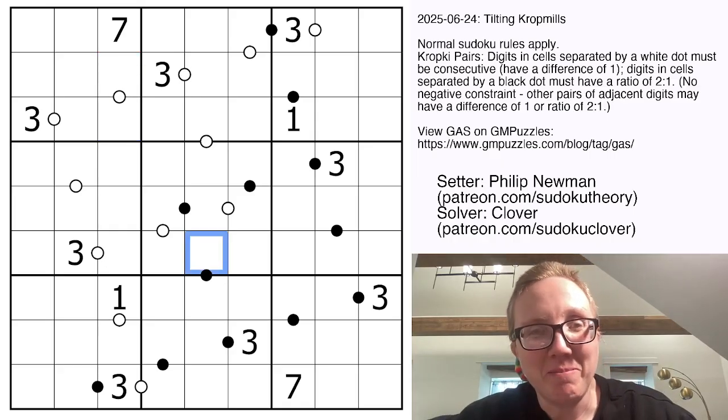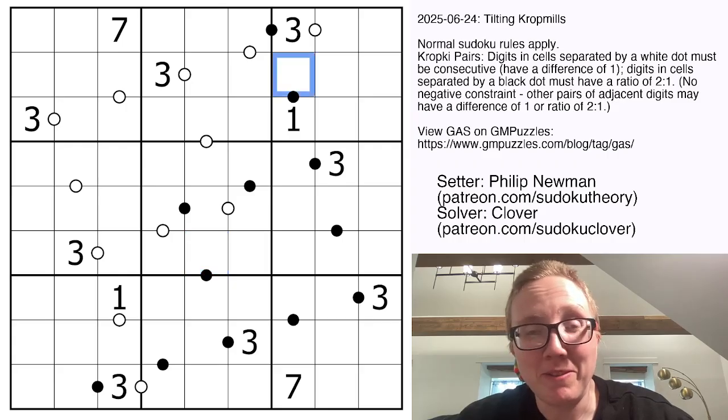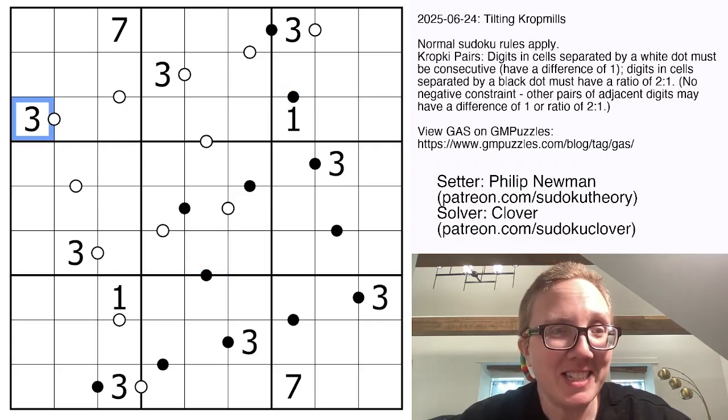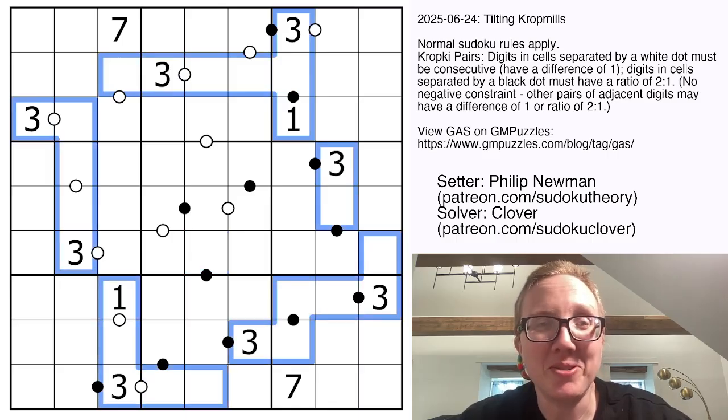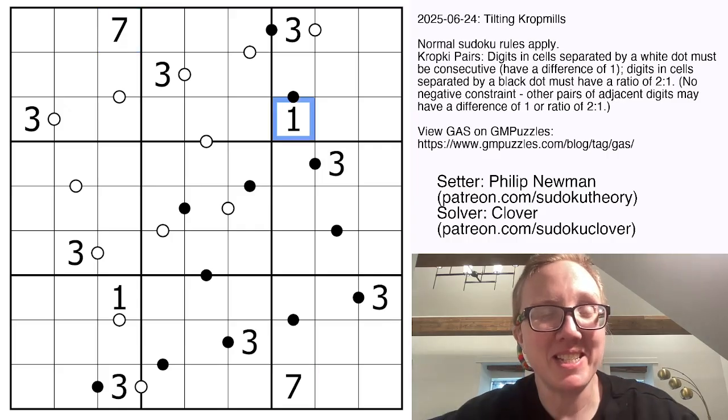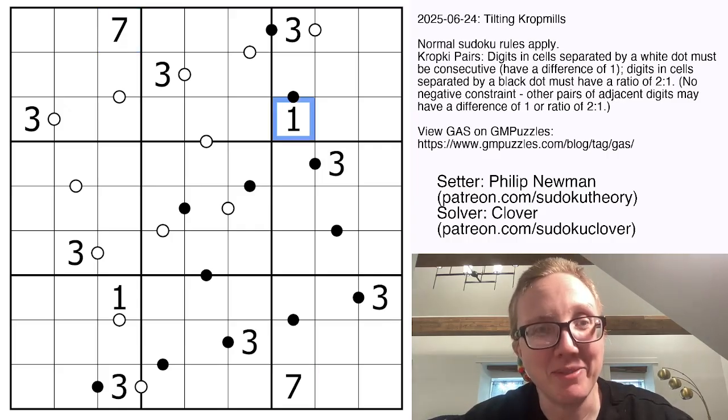This is a really beautiful visual theme, super impressive even by Philip's standards. I like the tilted square and even more interestingly, the fact that we only have three distinct givens: ones, threes, and sevens.